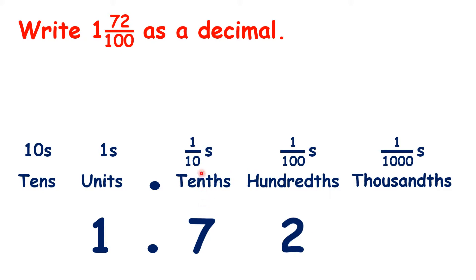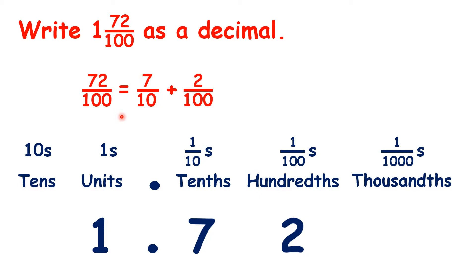So why do we write 7 in the tenths column when our mixed number has a denominator of 100, not 10? Well, you have to understand equivalent fractions. 72 hundredths is the same as 7 tenths plus 2 hundredths. That's because with 7 tenths, we can make an equivalent fraction of 70 hundredths, and 70 hundredths plus 2 hundredths is 72 hundredths. But because we can only have one digit in each place value column, we need to think of that 70 hundredths as 7 tenths.